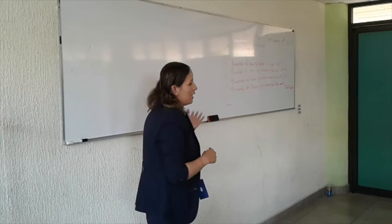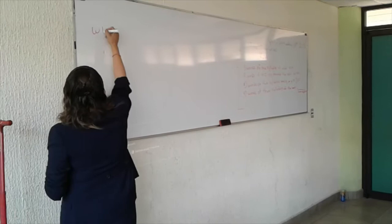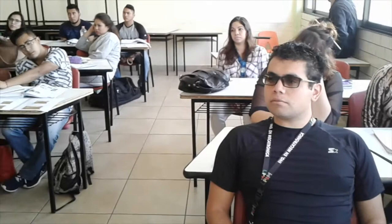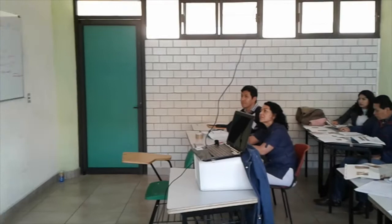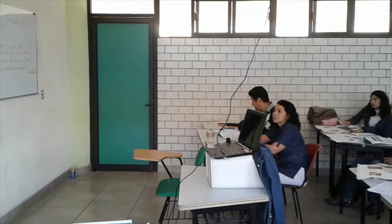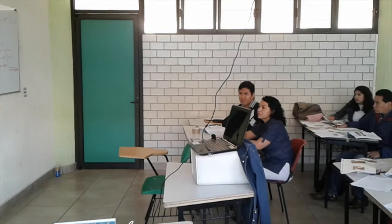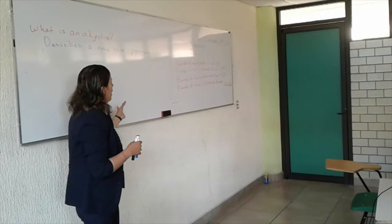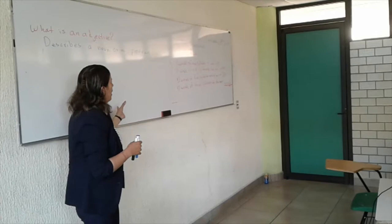Well guys, for this topic we are going to remember some important concepts. First of all, what is an adjective? Because it is very important that you remember what an adjective is. An adjective describes a noun or a pronoun. That's right. Richard, can you tell me what a noun is? A noun is an object or a person. Can you give me some examples? Yes, pen is an object, Mary is a person. Excellent, very good. That is a noun. So we use adjectives for describing nouns or pronouns.